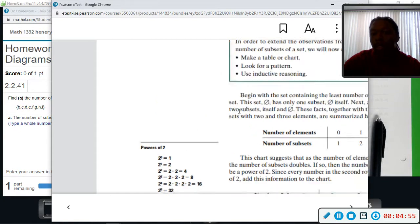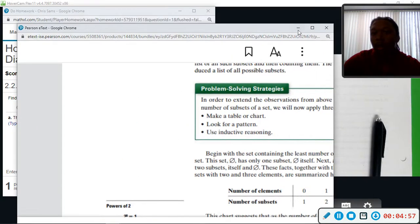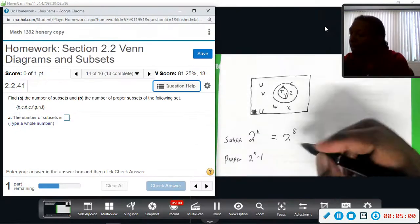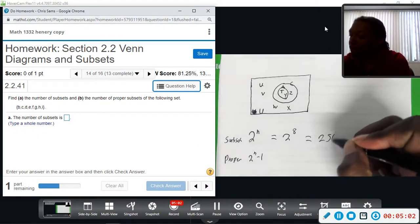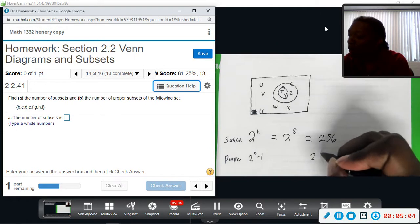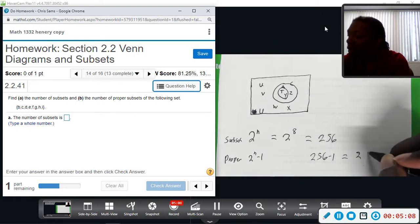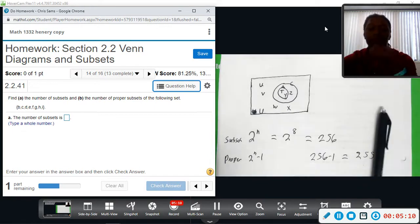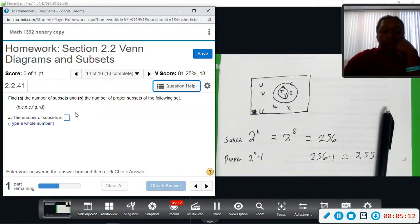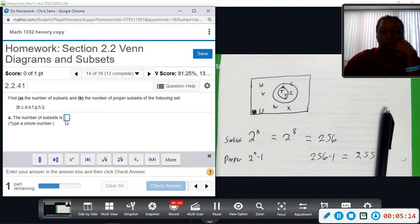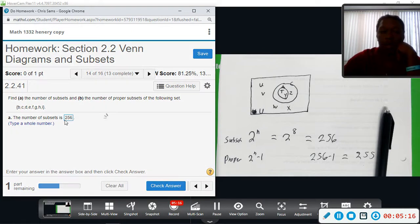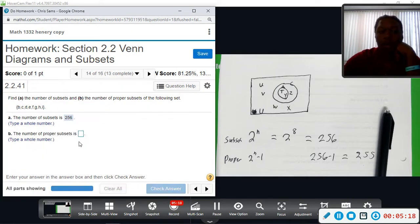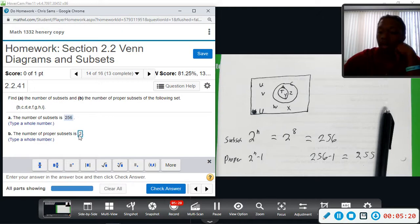So 256 is what we will get here. And then if we do 256 minus 1, that will give us 255. So number of subsets would be 256, and proper subsets would be 255.